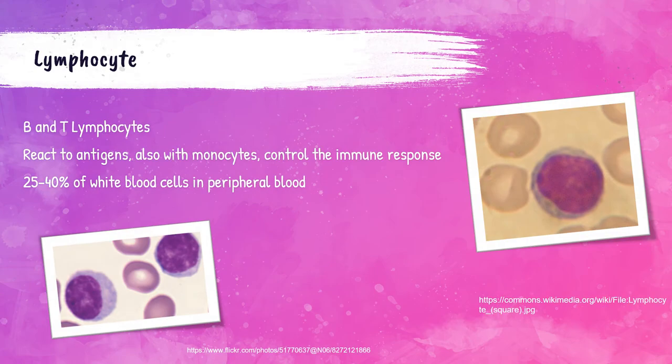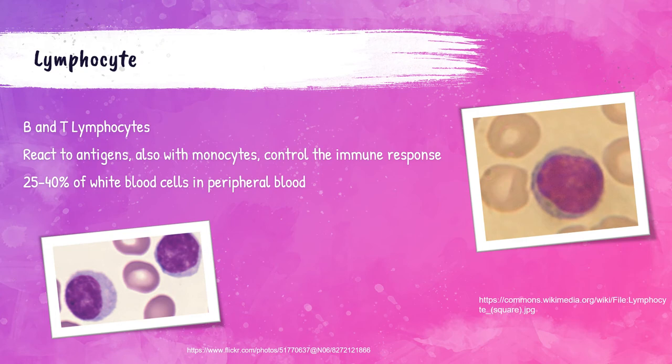Lymphocytes account for 25 to 40 percent of white blood cells in the peripheral bloodstream. Pay careful attention here — a lot of students confuse the terms leukocyte and lymphocyte. All lymphocytes are leukocytes, but not all leukocytes are lymphocytes. Lymphocytes help the immune system remember every antigen it comes in contact with. There are B and T lymphocytes; however, you cannot tell the difference between them under a microscope. Lymphocytes appear dark purple with a deep bluish nucleus and sky-blue cytoplasm.